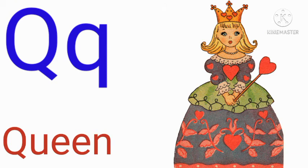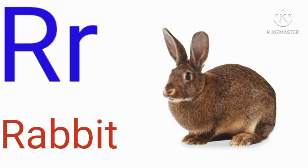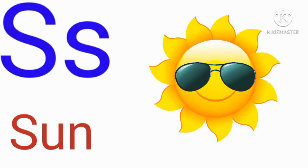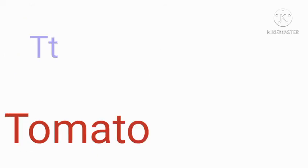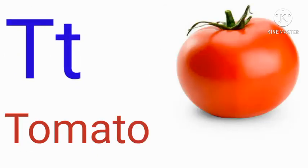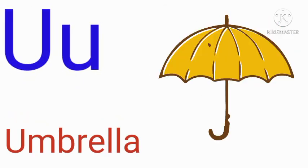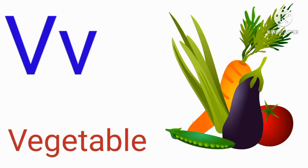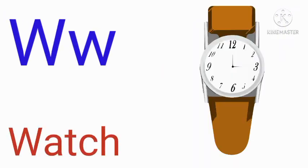Q for queen, R for rabbit, S for sun, T for tomato, U for umbrella, V for vegetable.